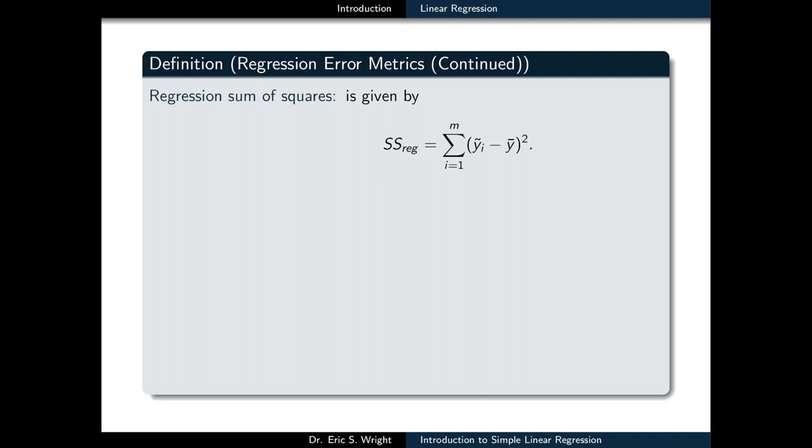In contrast, the regression sum of squares denoted by SS regression is computed by forming the sum of the squares of the deviation between the model predictions and the mean of the Y coordinates of the data set. The residual sum of squares denoted by SS residual is computed by forming the sum of the squares of the residuals.